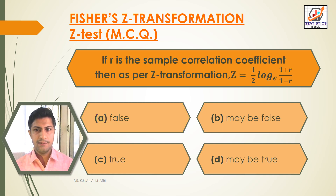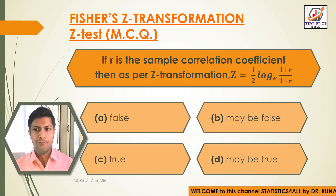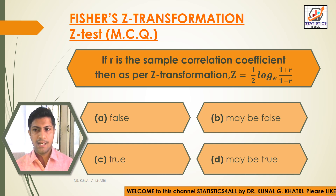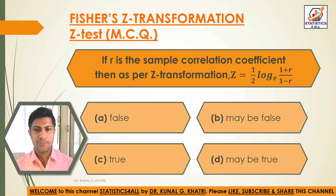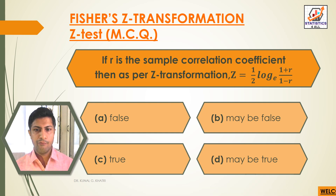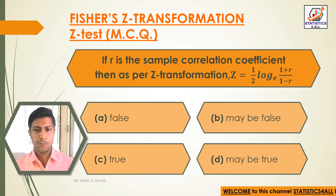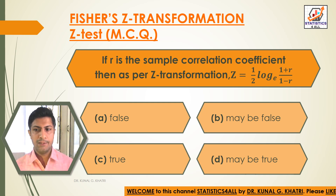Next question. If R is the sample correlation coefficient, then as per Z-Transformation, Z is equal to half log of (1 plus R) divided by (1 minus R), to the base E. Option A: False. Option B: May be false. Option C: True. Option D: May be true.